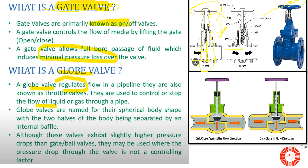In a gate valve there is minimal pressure loss because there is no obstruction inside the gate valve. When the pipe is connected, there are no frictional losses and no pressure losses because the flow gets a full bore passage. Your full bore passage of fluid is there in the system, hence there is less pressure loss and the system works very smoothly.